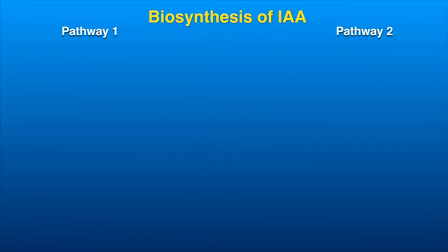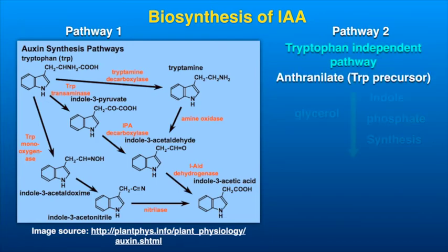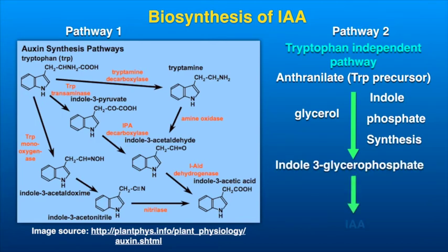Two pathways of IAA synthesis from the amino acid tryptophan have been identified. In one pathway, tryptophan transaminase activity synthesizes indole-3-pyruvic acid or IPA, that leads to indole acetaldehyde and then IAA. In the second pathway, tryptophan decarboxylase activity synthesizes tryptamine, which is oxidized by an amine oxidase to form indole acetaldehyde and then IAA. The tryptophan precursor anthranylate can also be used as a starting point for IAA synthesis in a tryptophan-independent pathway.